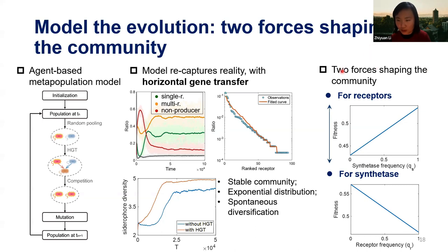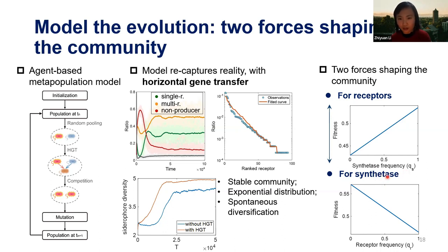We can see two forces shaping the community. For receptors, you want them to recognize the synthetase utilized by as many strains as possible so you can exploit it. But for synthetases, you want yours to be a minor subtype recognized by as few strains as possible. These two opposing forces drive diversification and the creation of new siderophores.